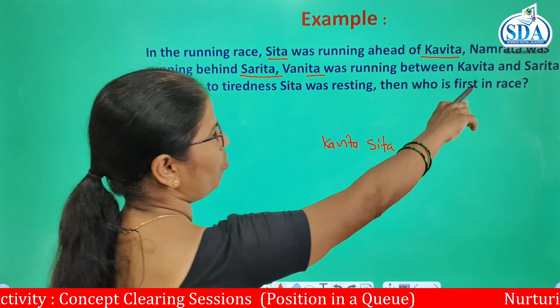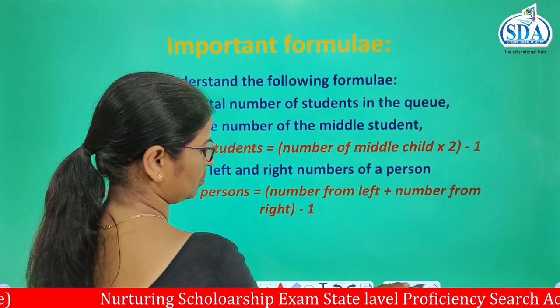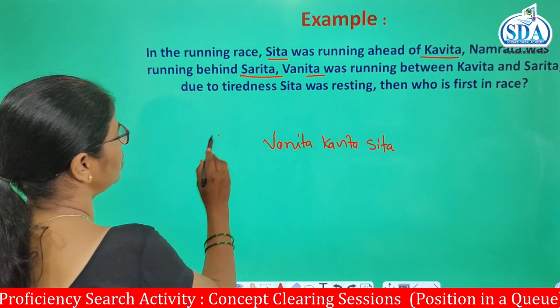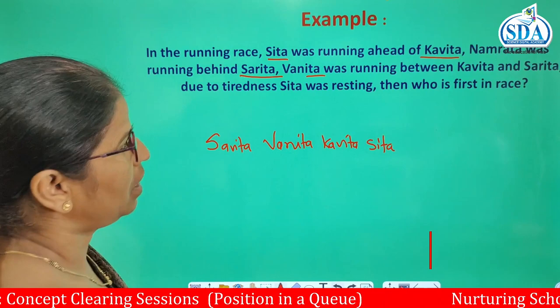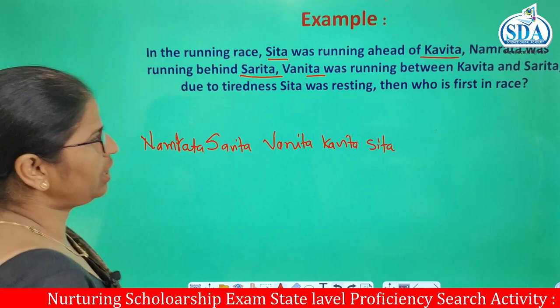Vanita was running between Kavita and Sarita, so after Kavita there will be Vanita, then Sarita. And Namrata was running behind Sarita, so after Sarita there is Namrata. The order is: Sita, Kavita, Vanita, Sarita, Namrata.